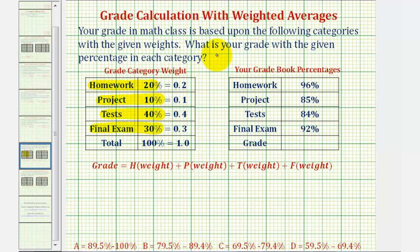We want to determine what is your grade with the given percentage in each category. You've earned an average of 96 percent on the homework, 85 percent on the project, 84 percent on the tests, and 92 percent on the final exam.